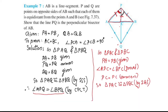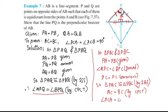Two triangles PAC and PBC are congruent by SAS — side, angle, side rule. We will now use CPCT. By CPCT, AC is equal to BC. Also, angle PCA is equal to angle PCB by CPCT. These two angles are equal.